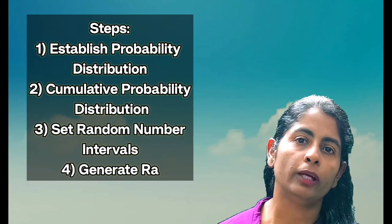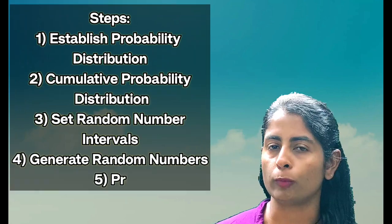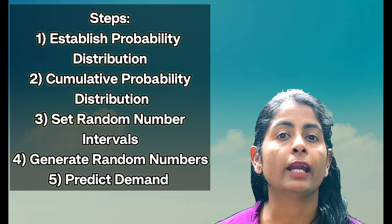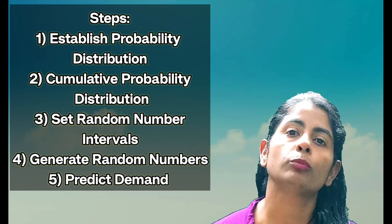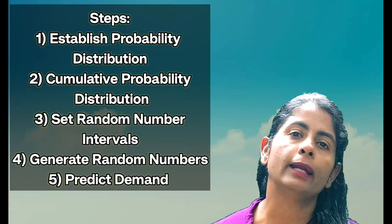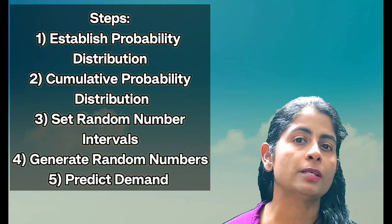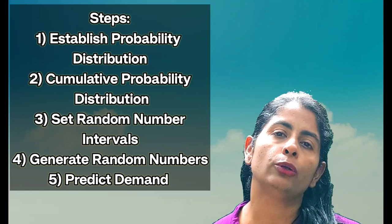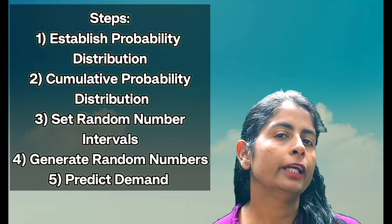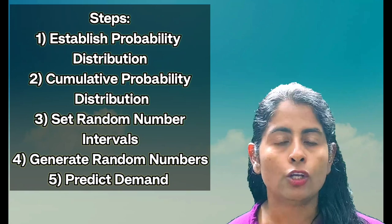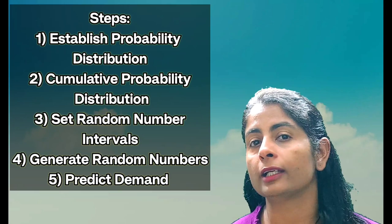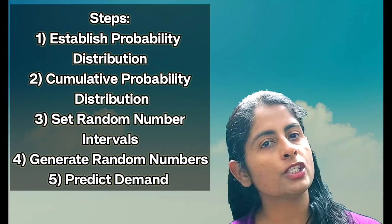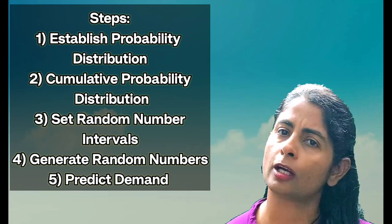The second step is to calculate the cumulative probability — we just accumulate that probability. The third step is the calculation of random number range; from the cumulative probability, we create a range for our random numbers. The fourth step is creating the future demand. We will place the data of random numbers and then locate those random numbers in the range that we have earlier created. With this future demand, we can calculate the average demand for the coming 10 days or 20 days.